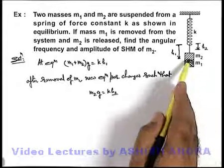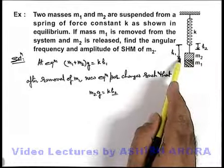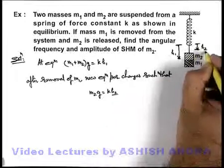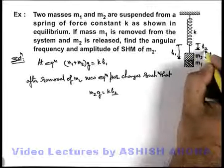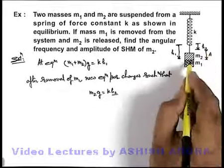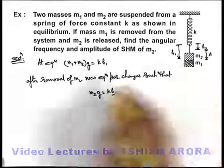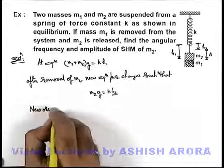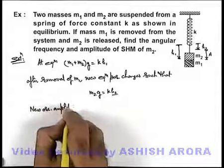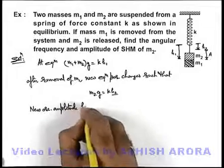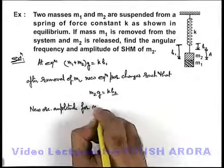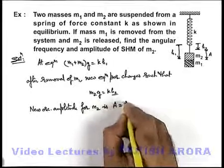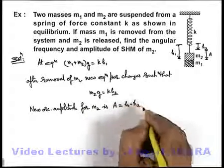When m1 is removed and m2 is released, m2 is released from a distance h1 and its equilibrium position is h2. This will be the amplitude of oscillation for m2, or we can say m2 is released from its lower extreme position. The new oscillation amplitude for m2 is h1 minus h2.